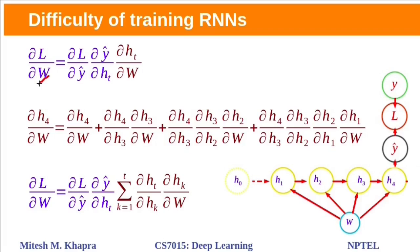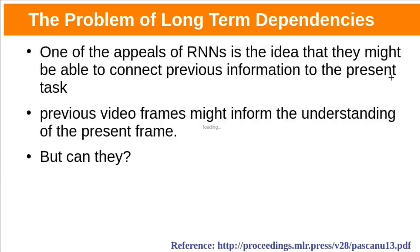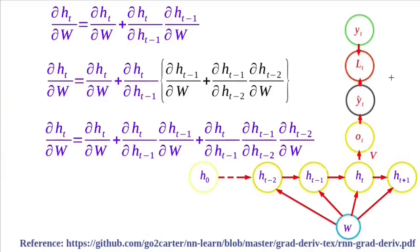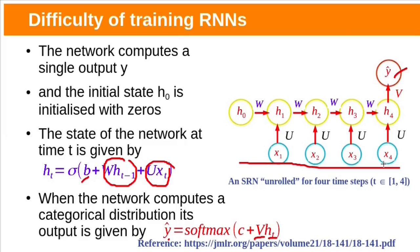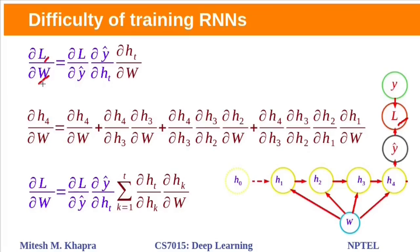But here there is a small change. Here loss is at the final time step. But in previous class, we have used different model where the loss at each time step. Here we have model like this. So we have losses at each time steps. Every time this network is giving output. But here we are using different networks.